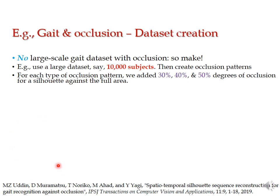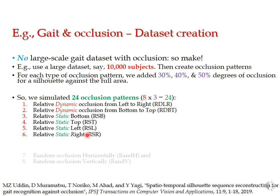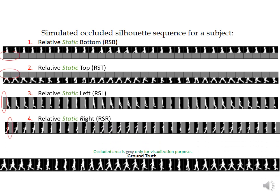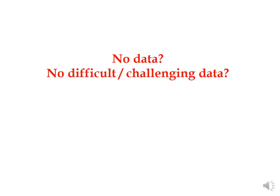One challenge in gait analysis is occlusion — when part of the body is blocked. Getting occluded data from many people is very difficult. So one approach is to create an artificial large-scale gait dataset with occlusion: take 10,000 subjects' data and artificially place a bar causing 30% or 40% occlusion in different orientations — horizontally, vertically, or randomly — creating diverse occlusion patterns. For example, half the silhouette missing simulates walking past a pillar. You can create bottom, top, left, right, and random occlusion patterns this way.